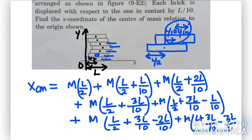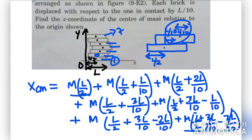So the last term simplifies to L/2 + 3L/10 - 3L/10 = L/2. The first one and the seventh one are actually at the same distance from the origin — both at L/2. Therefore we have the same answer for the last one and the first one: M times L/2 and M times L/2.